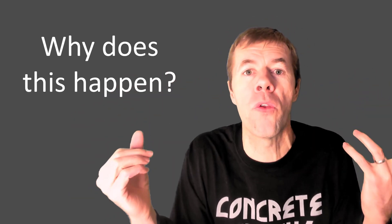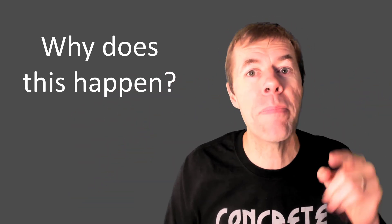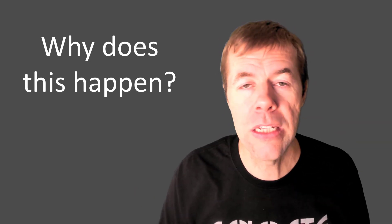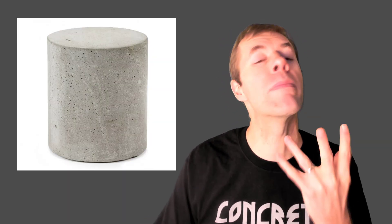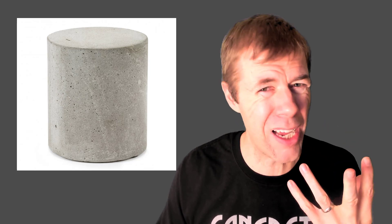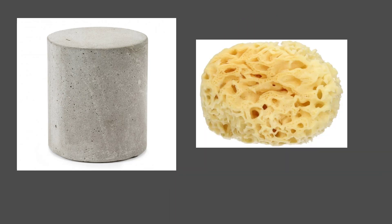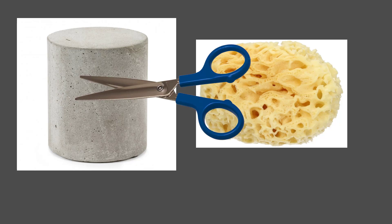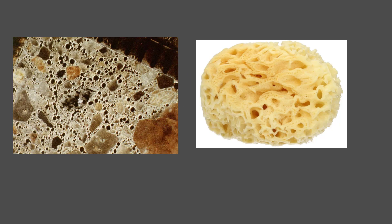But why in the world does this happen? That is what this video is all about. Concrete, believe it or not, is like a hard sponge. There's actually a bunch of pores in concrete. If we cut it, polish it, and look inside of it — see all the pores? Kind of looks like a sponge.